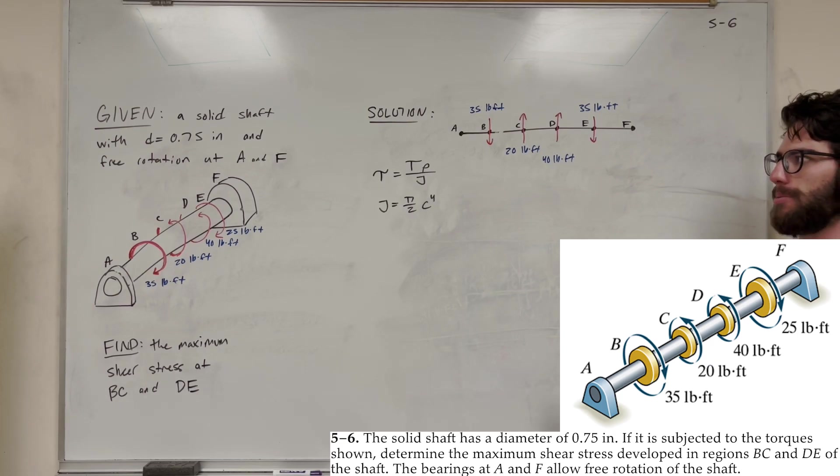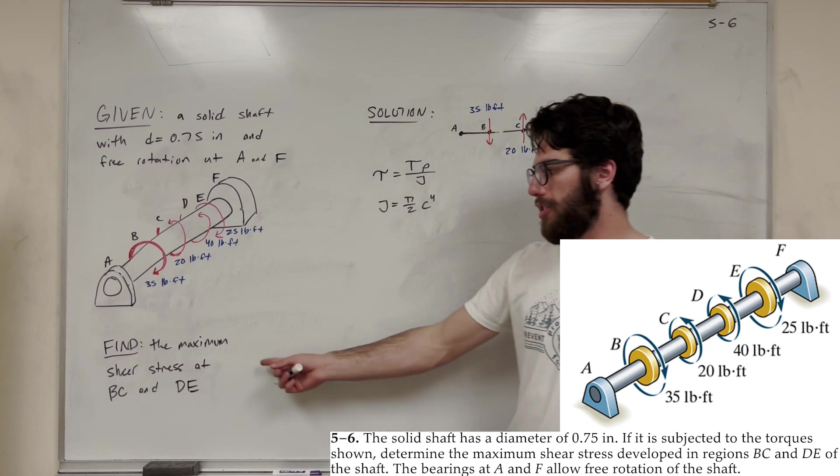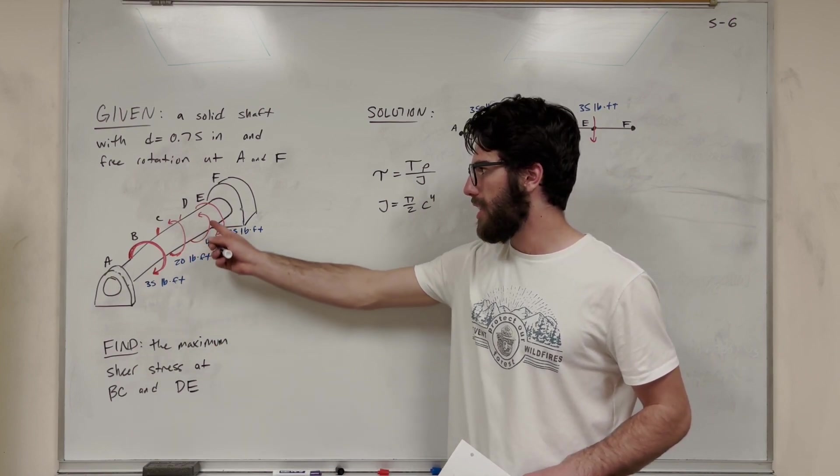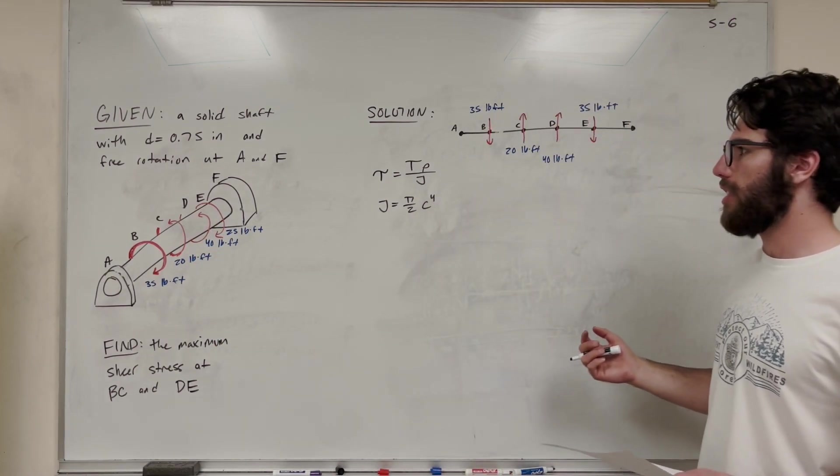What's up Cal gang? Welcome back to some mechanics and materials. So let's solve this problem here. We're given a solid shaft with a diameter of 0.75 inches and we have free rotation at A and F. So our goal is to find the maximum shear stress in between B and C and in between D and E. So let's go ahead and get started.